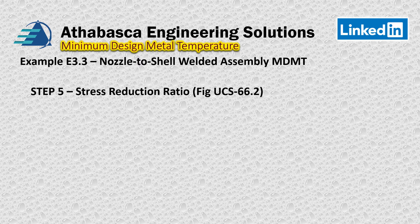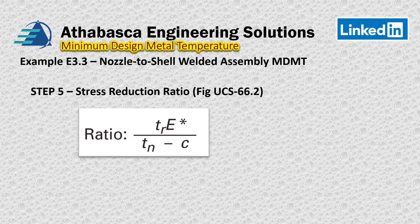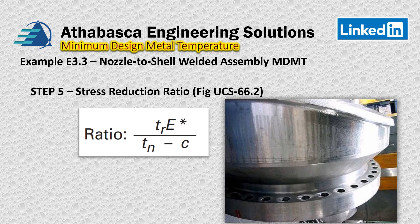Onward to step five: the stress reduction ratio. This ratio was introduced in detail in the previous presentation, and we're going to work on it with regards to nozzles. The stress ratio is the ratio of the used stress over the available stress — an expression of how stressed the part is, because ASME allows a credit for that on the MDMT. So you have TR, the required thickness, over the nominal thickness minus the corrosion allowance. You can also include mill tolerance. We continue with our forged nozzle.